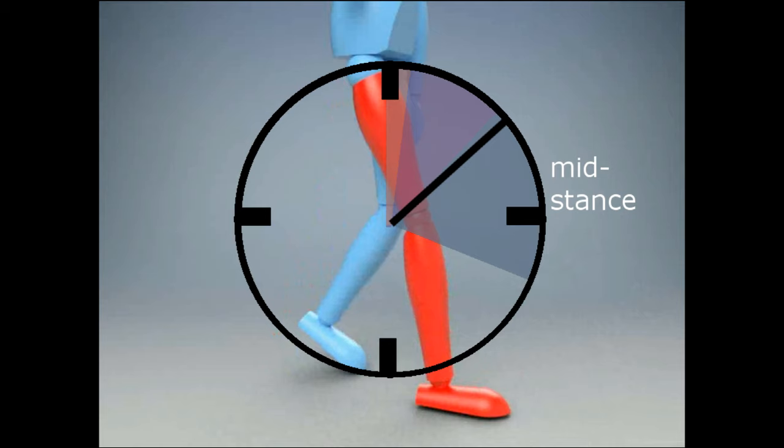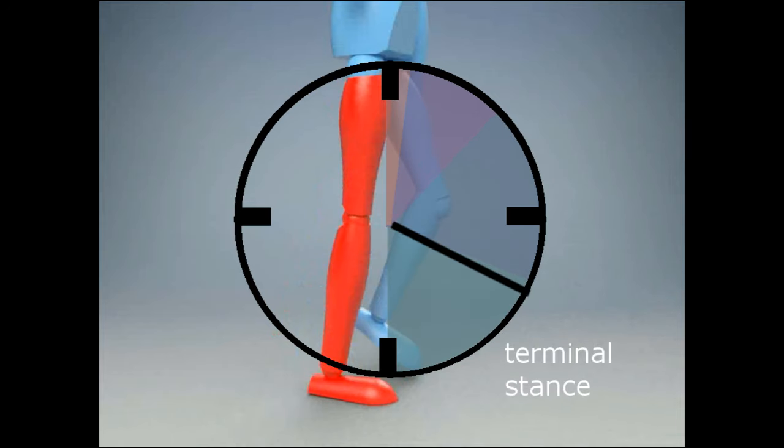The next 19% of the gait cycle is mid-stance, which makes sense since it is in the middle of stance. There is the terminal stance phase for another 19% of the gait cycle.